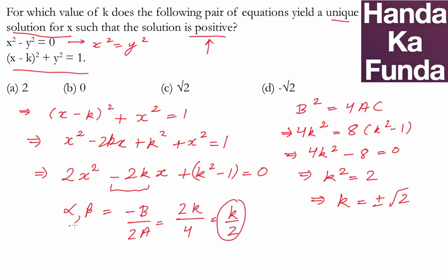then k also should be positive. And that means the value of k will be the positive root of 2 or option c.